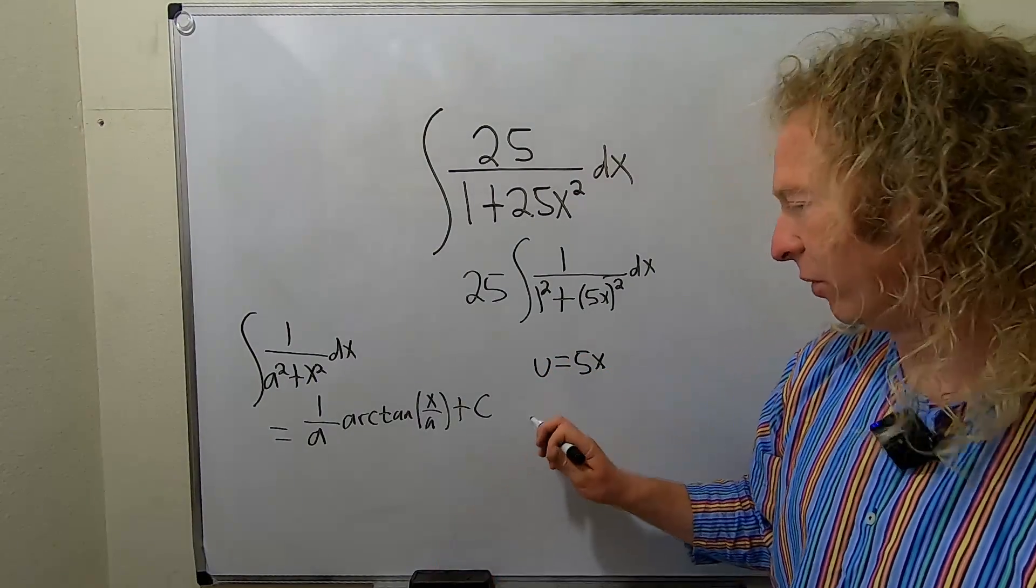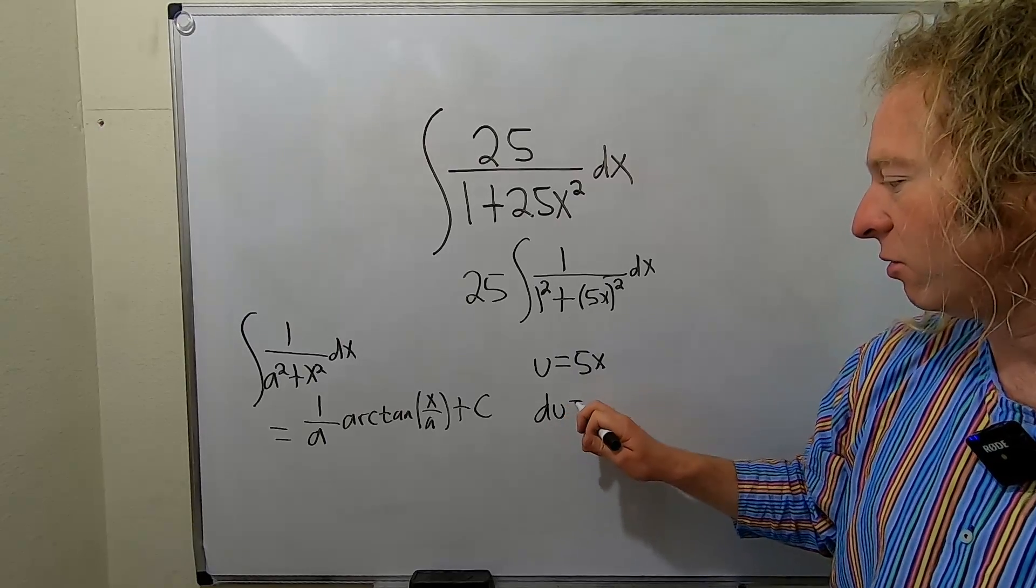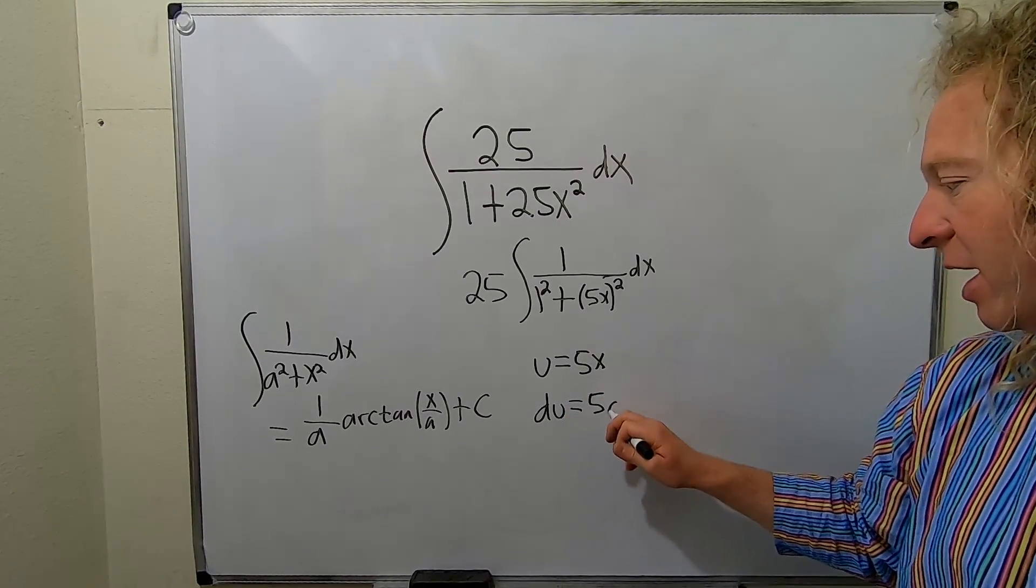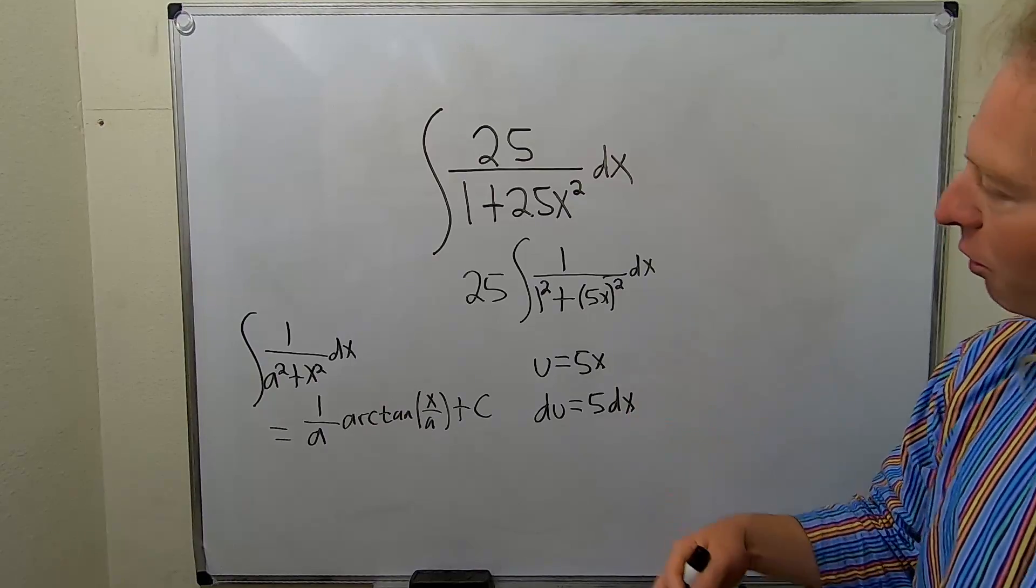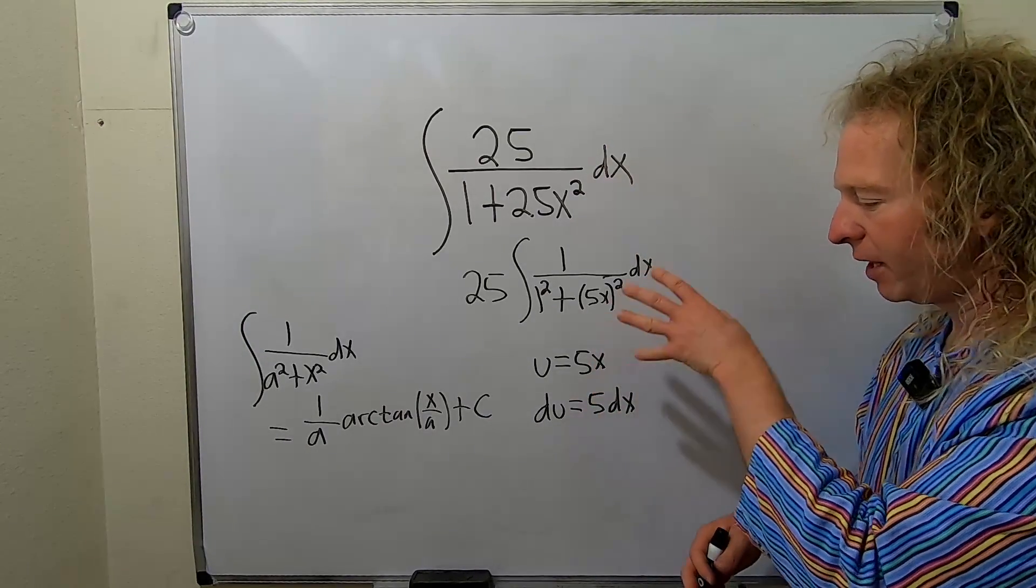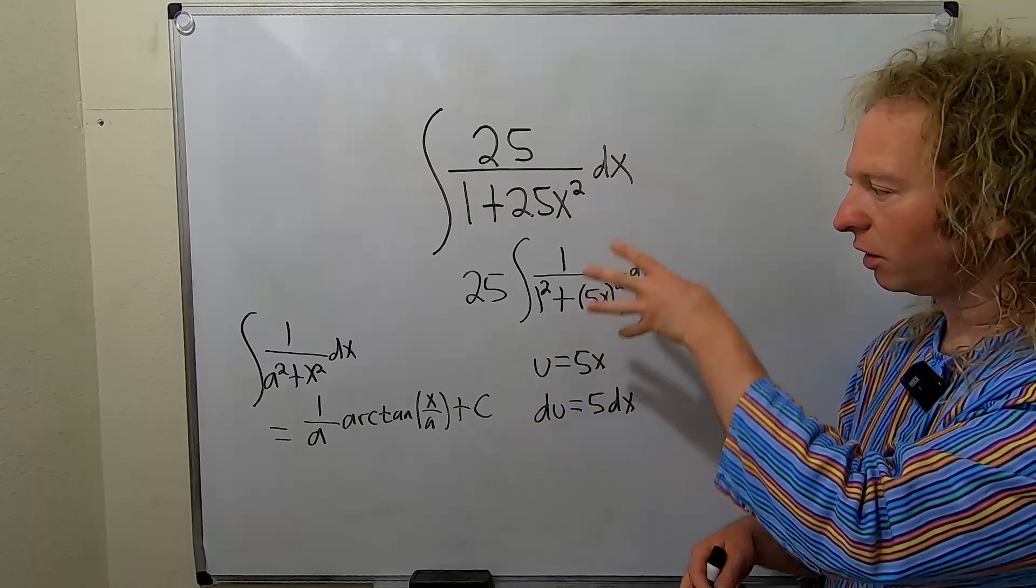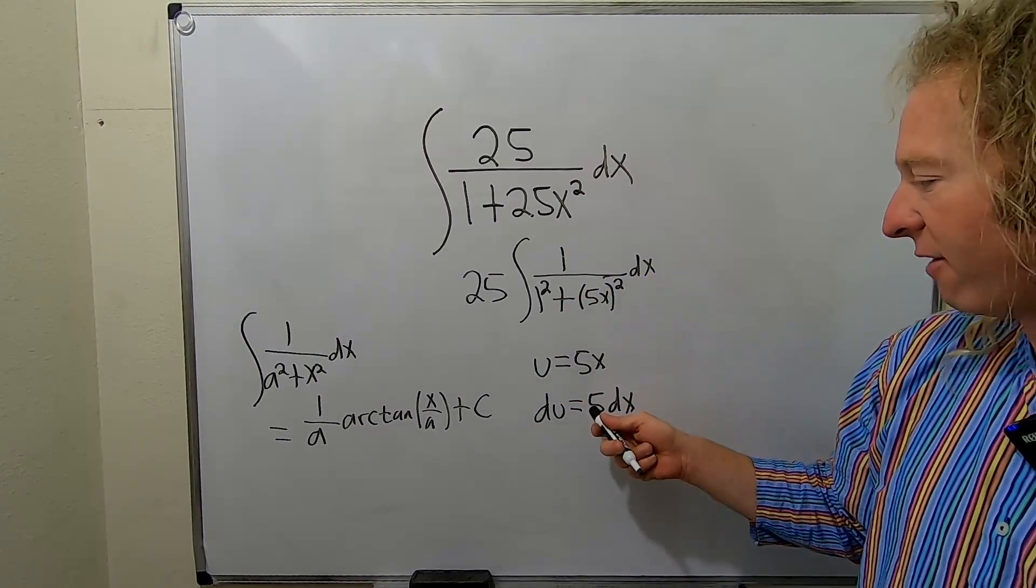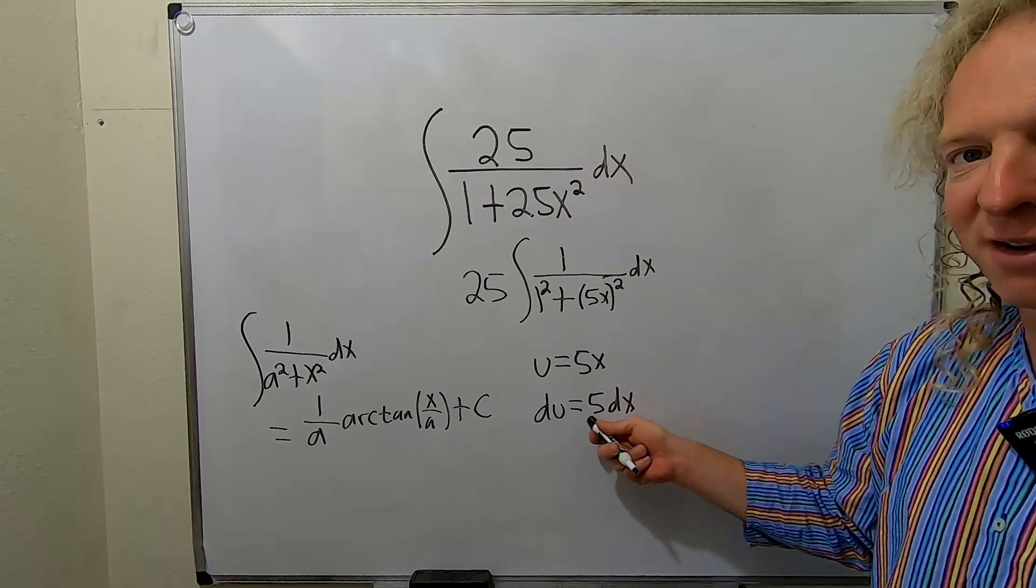And then we take the derivative. So we write du equals, and then the derivative of x is just 1. So we just write 5 dx. And when you're doing integration like this, when you get to this step, the goal is to make this look like what's in your integrand. So here we have a 1 dx. Here we have 5 dx. So we have to divide by 5.